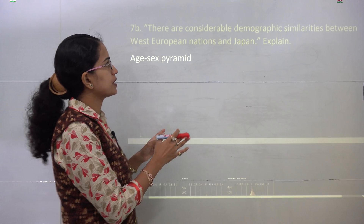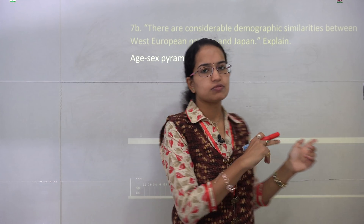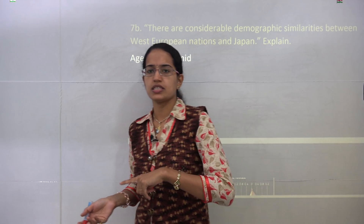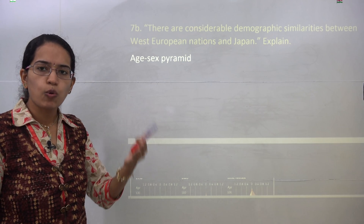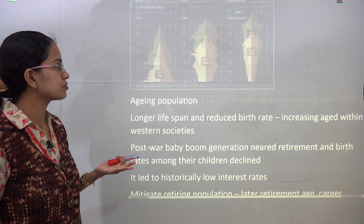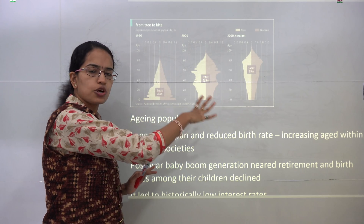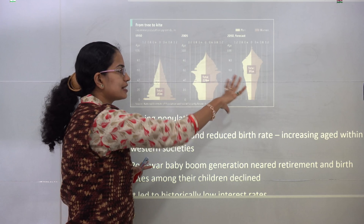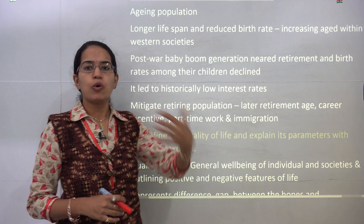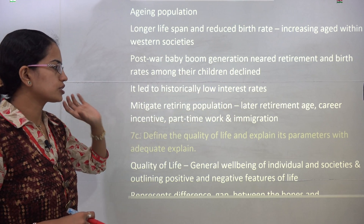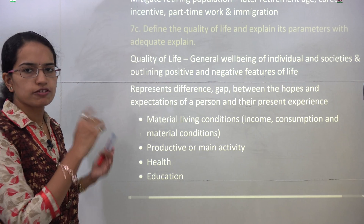The next question: there are considerable demographic similarities between West European nations and Japan. This was also part of this year's NET Geography examination. There has been a kind of decline in the age pyramid with an aging population seen in both regions. There has been a change in the population structure of West Europe as well as Japan, with more aging population visible. Later retirement age, more career opportunities, and careers extending to a later age are all ways to reduce or mitigate the effects of a retiring population.